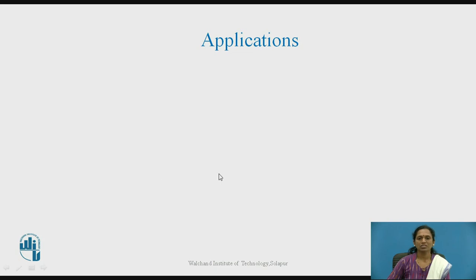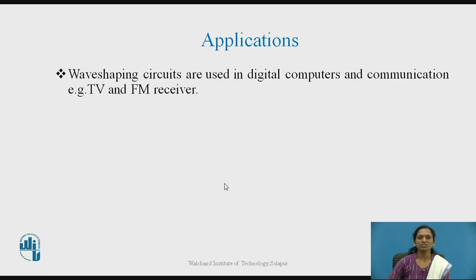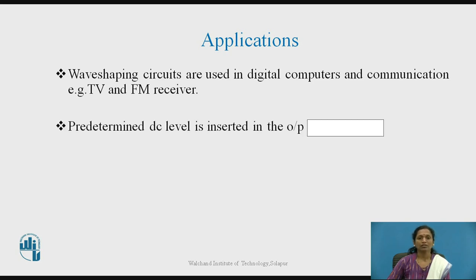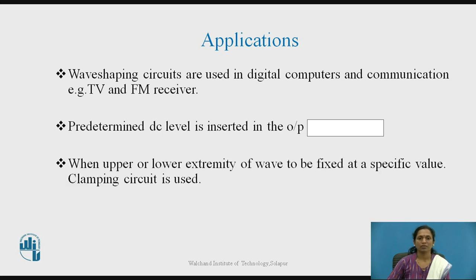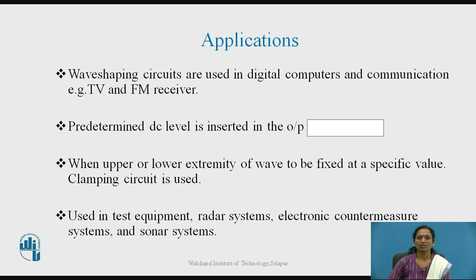Precision clamping circuits are used in wave shaping applications in digital computers and communication systems. Examples include TV and FM receivers, where wave shaping is done using clipping and clamping circuits. Since a pre-determined DC level is inserted in the output, this circuit is also called a DC restorer. When the lower points of a waveform must be fixed at a specific value, clamping circuits are used. They are also very useful in testing equipment, radar systems, electronic countermeasure systems, and sonar systems.